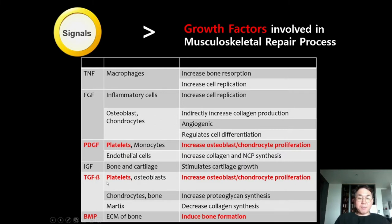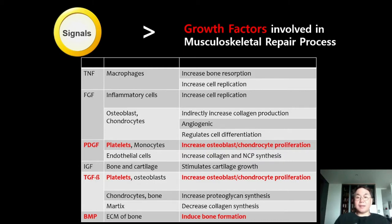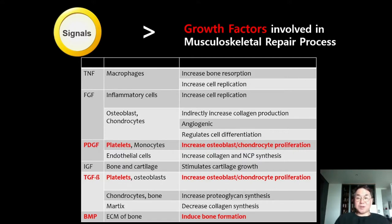PDGF and TGF-beta are located inside platelets. The main role of PDGF and TGF-beta is to increase osteoblast proliferation — in other words, to increase the number of osteoblasts — so we can get faster and more predictable bone regeneration at the GBR site. BMP can induce bone formation directly by stimulating or activating inactive osteoblasts. The activated osteoblasts can then make bone, and in this way we can achieve successful bone regeneration after GBR.